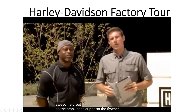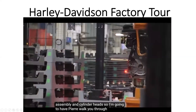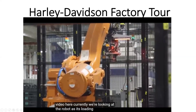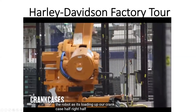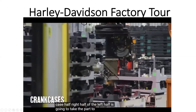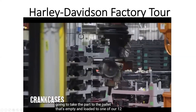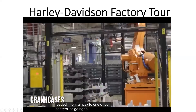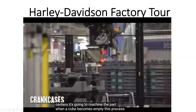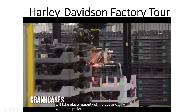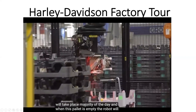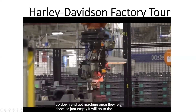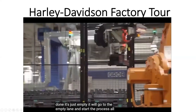The crank case supports the flywheel assembly and cylinder heads. Currently we're looking at the robot as it's loading up our crank case half — a right half and a left half. It's going to take the part to the pallet that's empty and load it to one of our 12 machining cell centers. After it's loaded and on its way to one of our centers, it's going to machine the part when the cube becomes empty. This process will take place the majority of the day. When the dunnage is empty, it will go to the empty lane and start the process all over again.